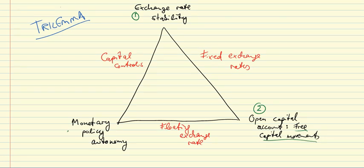Third, it is usually considered beneficial for the country to have monetary policy autonomy — meaning that monetary authorities can use the interest rate to target domestic economic activity: reducing interest rates in a recession and increasing them at the peak of the business cycle to control inflation.